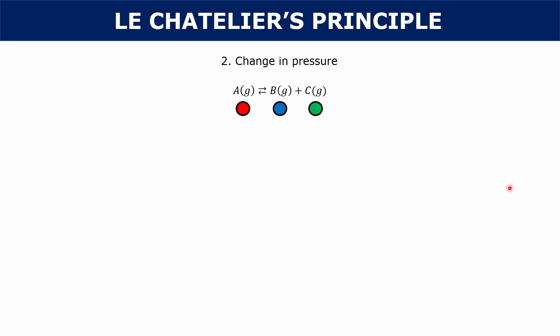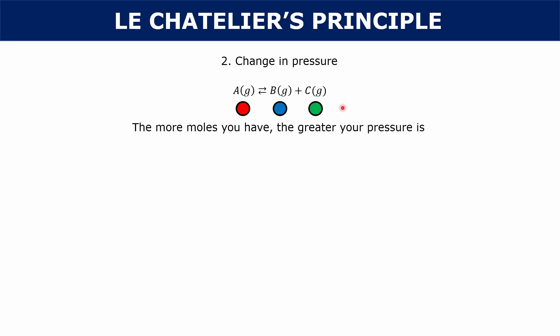Let's move to a change in pressure. Let's say you have a reaction where A is in equilibrium with B and C, and all three — A, B, and C — are gases. One important thing to keep in mind is that the more moles you have, the greater your pressure is. If you had a system with just your reactants and a system with just your products, your product system would have twice the pressure because there are twice as many moles of gas on the product side.